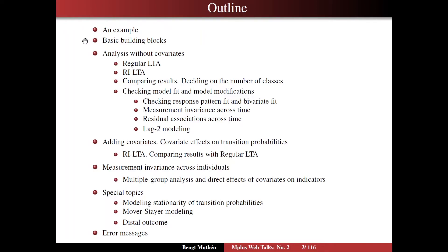In contrast, section two — the basic statistical building blocks section — goes deep into the technicalities of the statistics behind the latent transition analyses. You may want to study that right away or come back to it once you've gotten into the analyses. I'll start off with analysis without covariates, where I'll talk about regular LTA and RILTA, the new random intercept version. I'll compare results from those kinds of analyses and discuss how to decide on the number of classes using those two approaches.